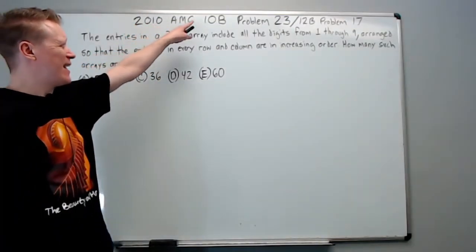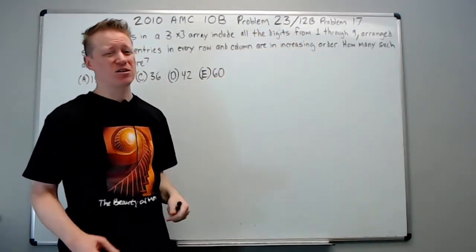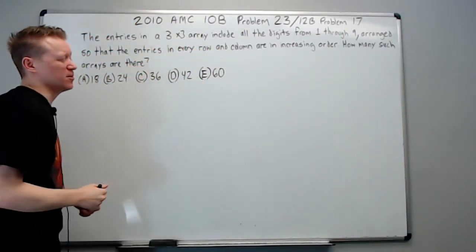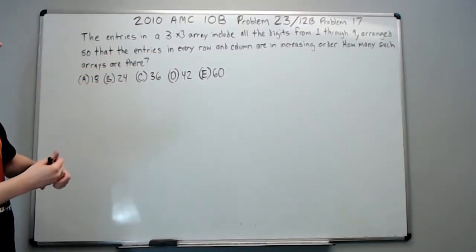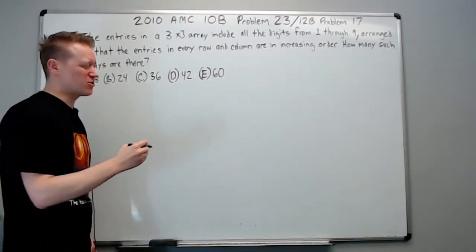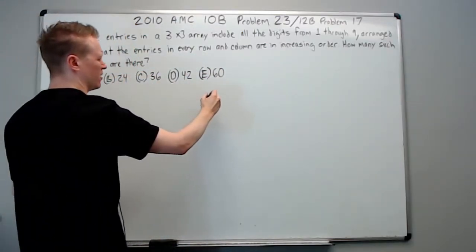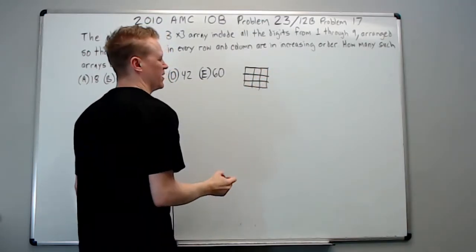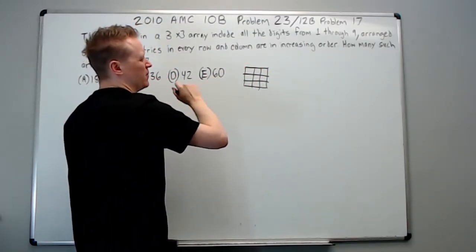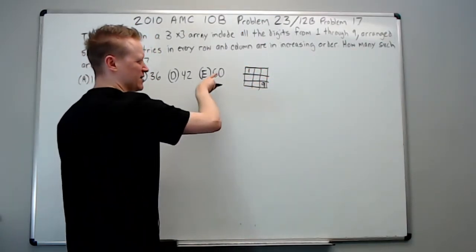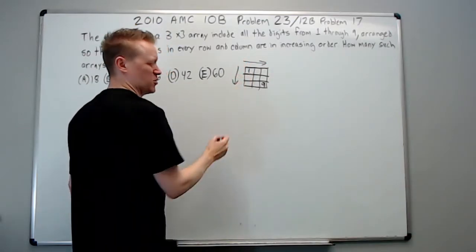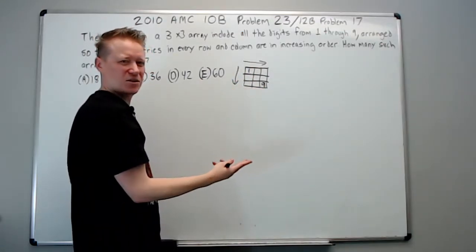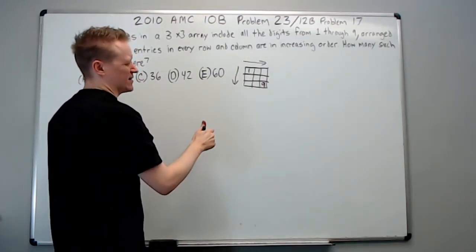All right. This is the 2010 AMC 10B problem 23. It was also the 12B problem 17. The entries in a three by three array include all the digits from one through nine arranged so that the entries in every row and column are in increasing order. How many such arrays are there? Don't spend a lot of time, you know, thinking just yet. Make the array some kind of three by three, almost like you're going to play tic-tac-toe with the extra box around it. Obviously this has to be one and this has to be nine because it's increasing going this way and this way. So if there's anything but one here, it won't work, and anything but nine here likewise won't work because then nine would have to go somewhere else. Likewise with one. So we know that has to happen.